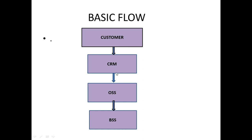After CRM, the main part that comes is OSS — Operation Support System. In this block, the order from the customer is accepted, and the processing and implementation is done. The main role of OSS is customer activation. What happens is: in CRM the customer is created, their ID is created, their details are stored, and whatever service they want — for example, voice calls — whatever request comes from the customer through CRM, OSS will activate that particular service.